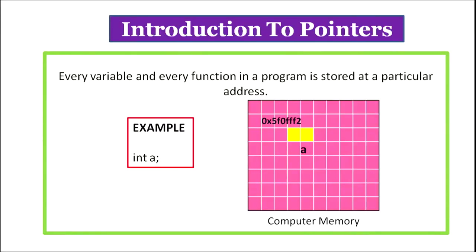Till now we were accessing the value of a variable by its name. Whenever we declare a variable, a size of memory according to the data type of the variable is allocated, and this memory is referred to by the name of the variable. For example, if we declare a variable 'a' of type integer, then two bytes of memory is allocated, this memory has a certain address, and it will be referred to by the name 'a'.